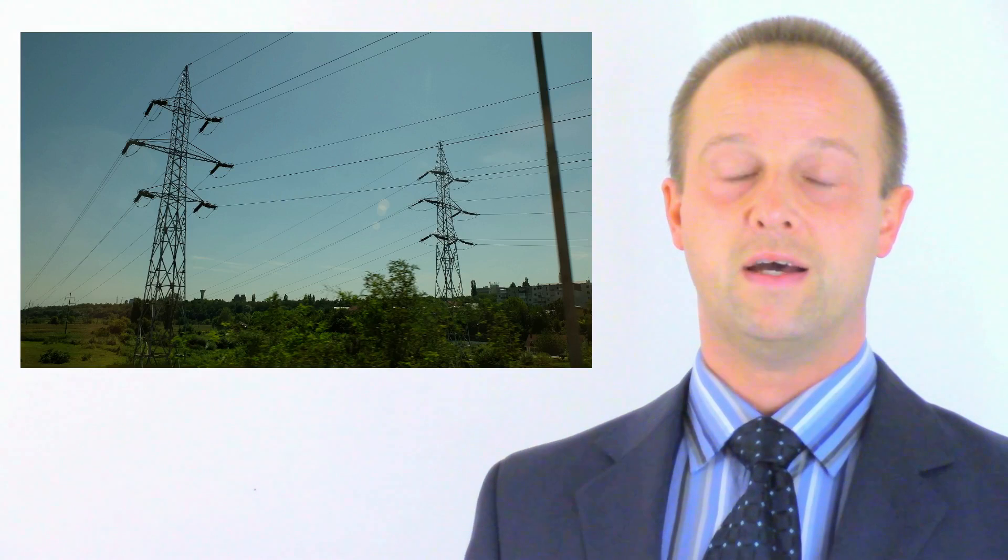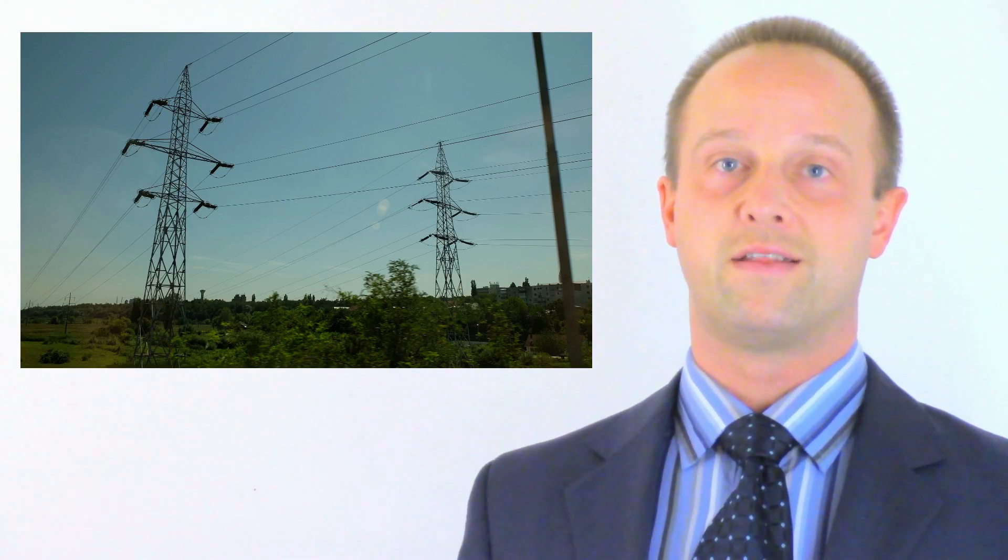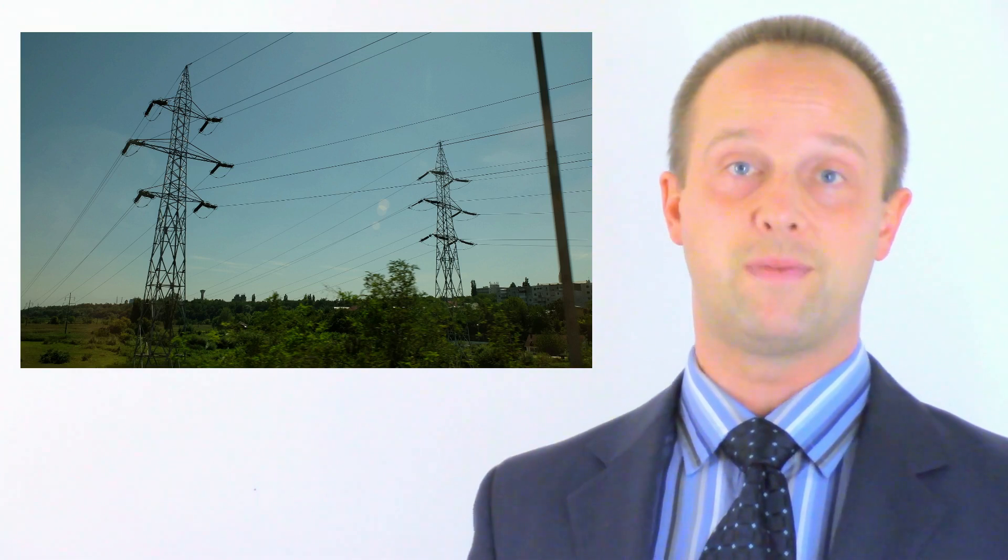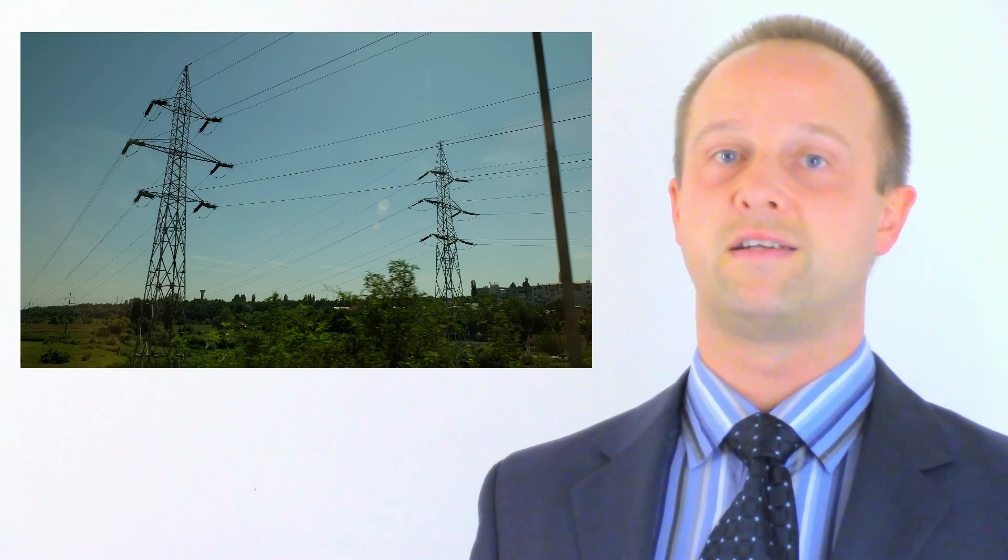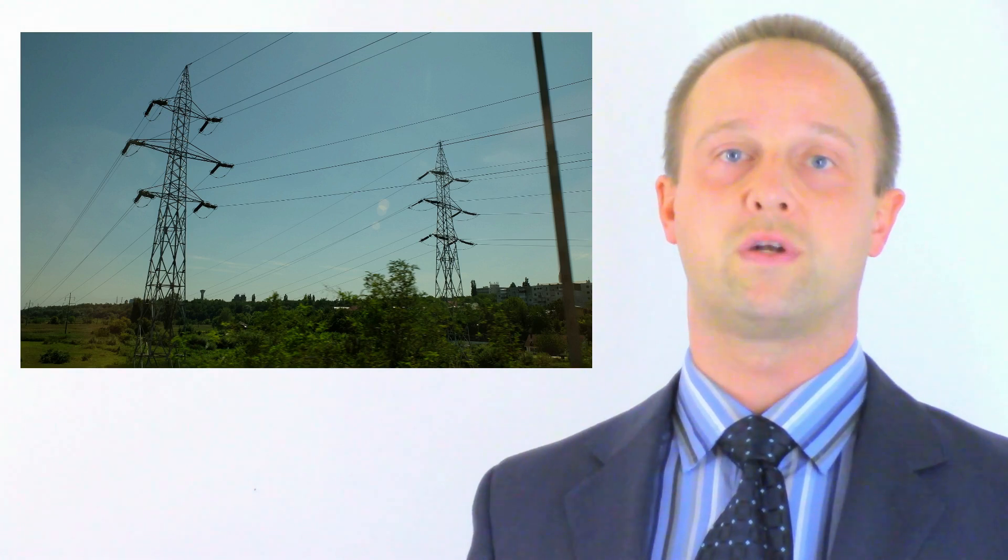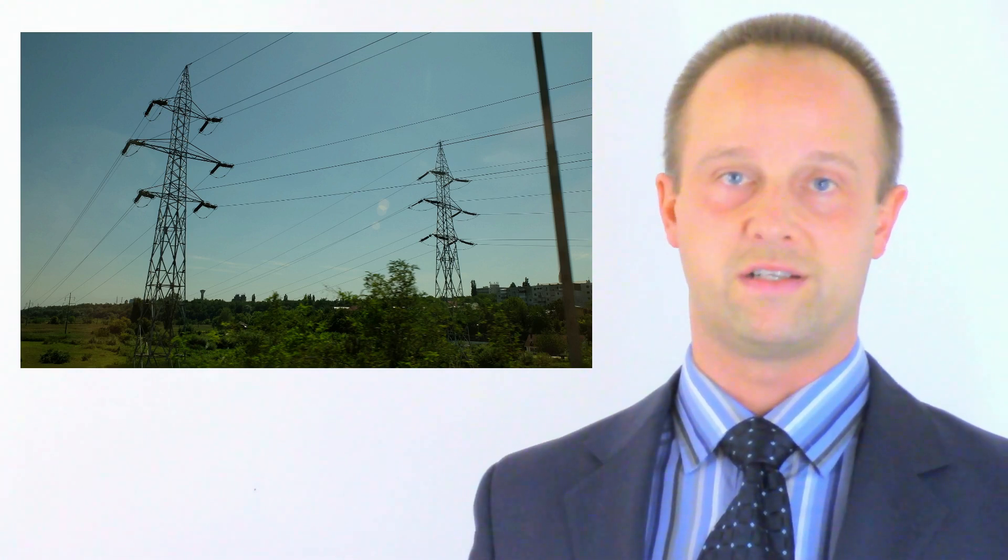To illustrate why this is useful, I want you to think about a power line. As electricity flows along it, the resistance of the line is going to cause some power to be wasted, mainly by heating the wires. Let's imagine it has a resistance of half an Ohm per kilometre. So a 100 kilometre line has a total resistance of 50 Ohms, which is a fairly typical value for a high voltage distribution system.